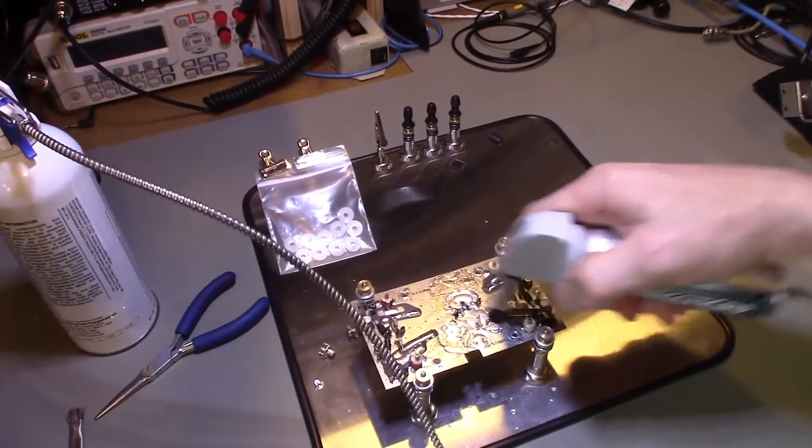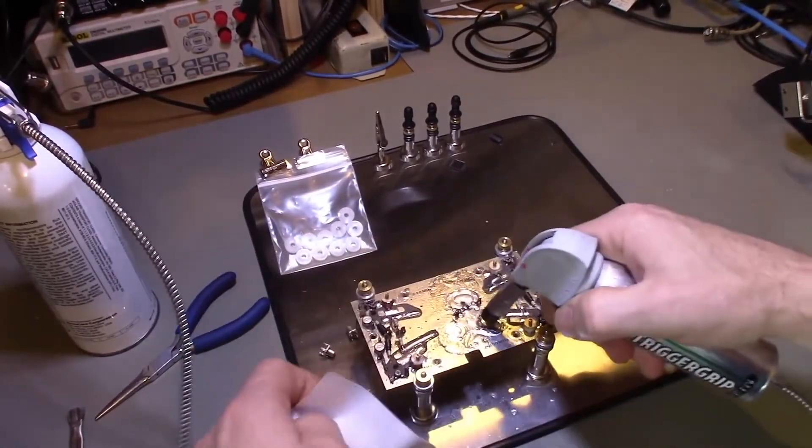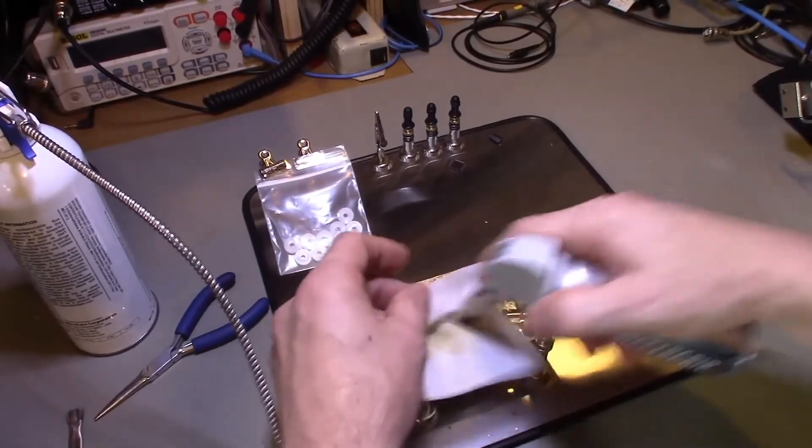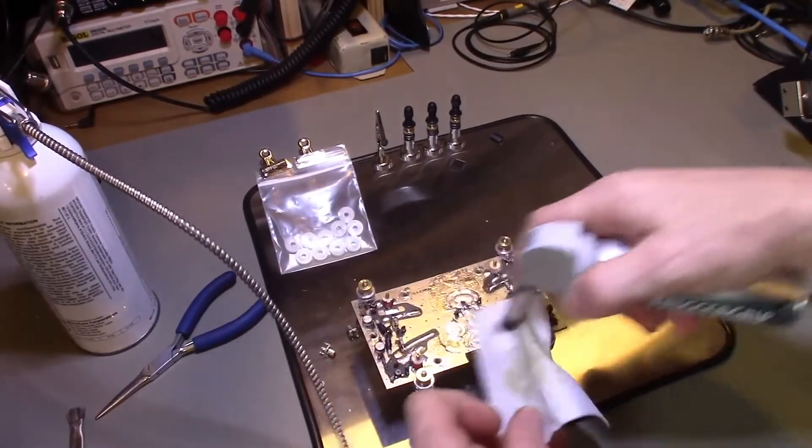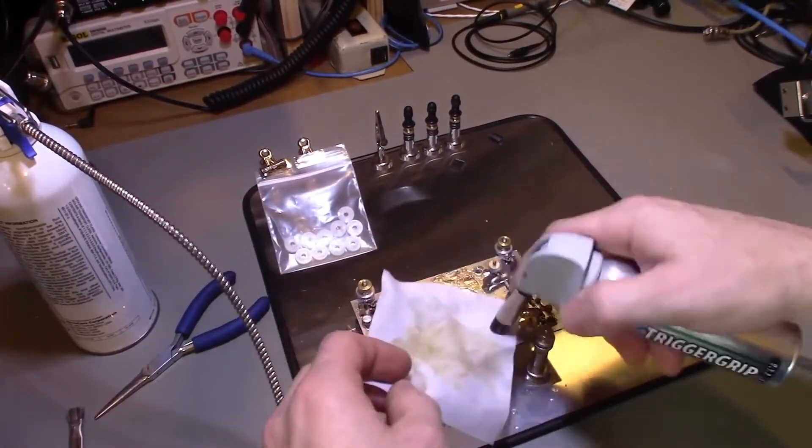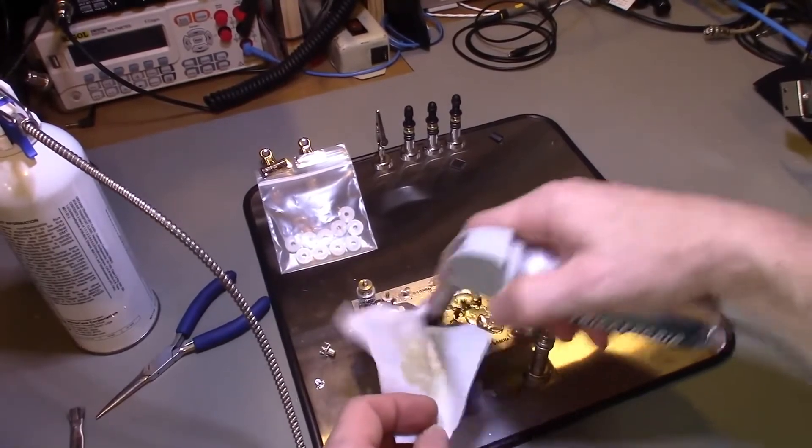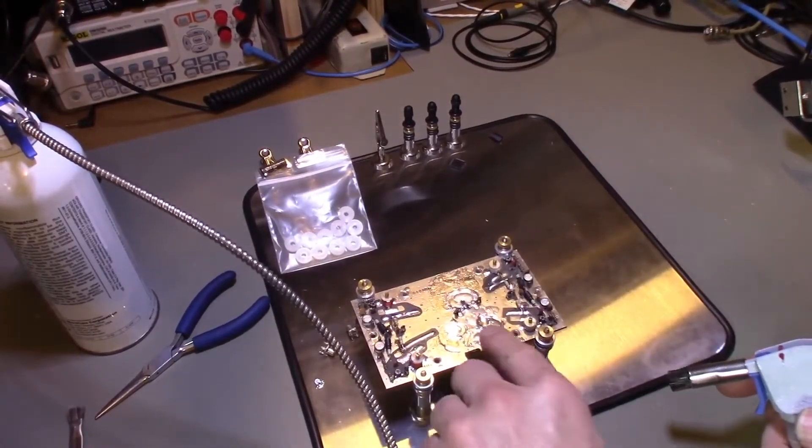But I really baked that stuff on there and like I say I had a lot of it. And you have to remember there's also flux in the solder that I was using. Again, this is almost a torture test for this stuff. The amount of flux residue is not normal. Normal flux residue, normally you'd have just a little bit and that would be it.